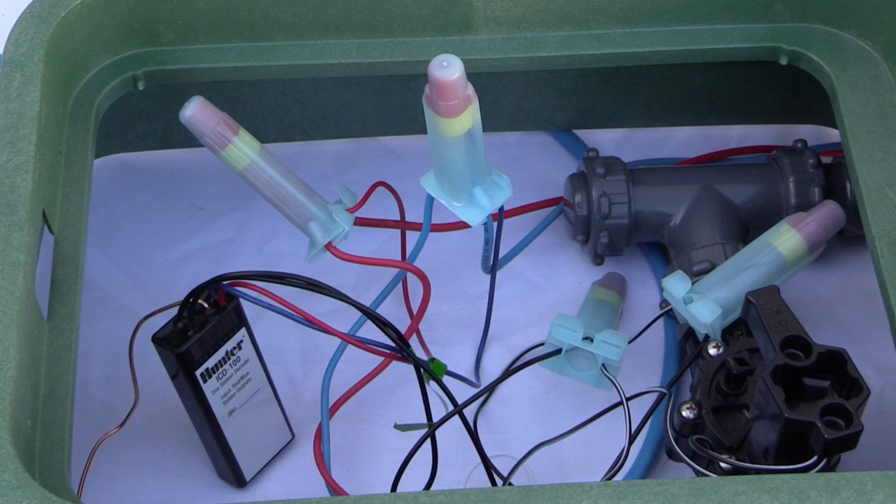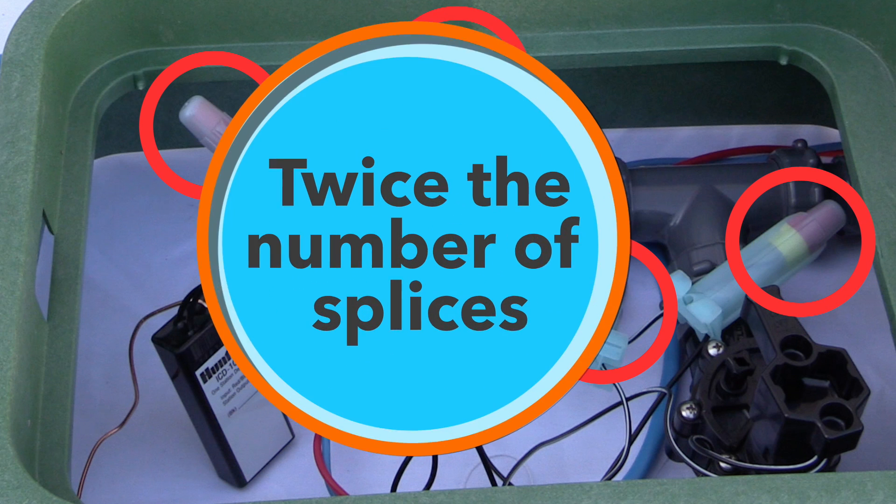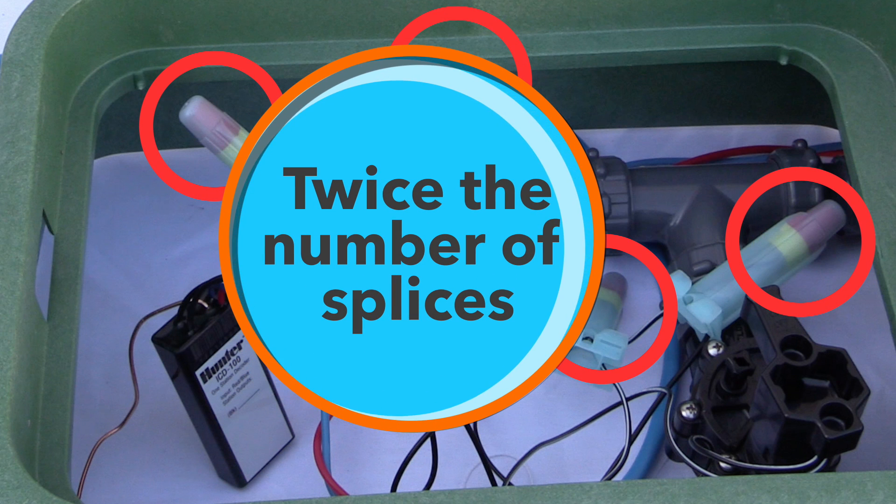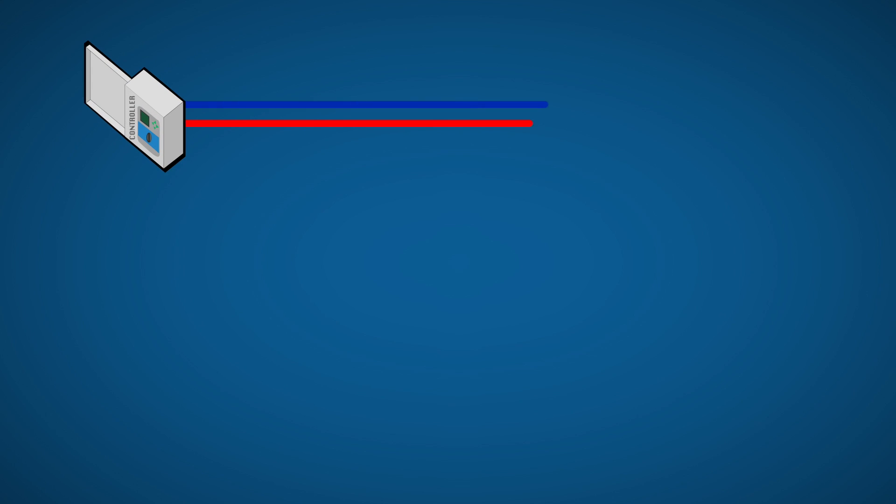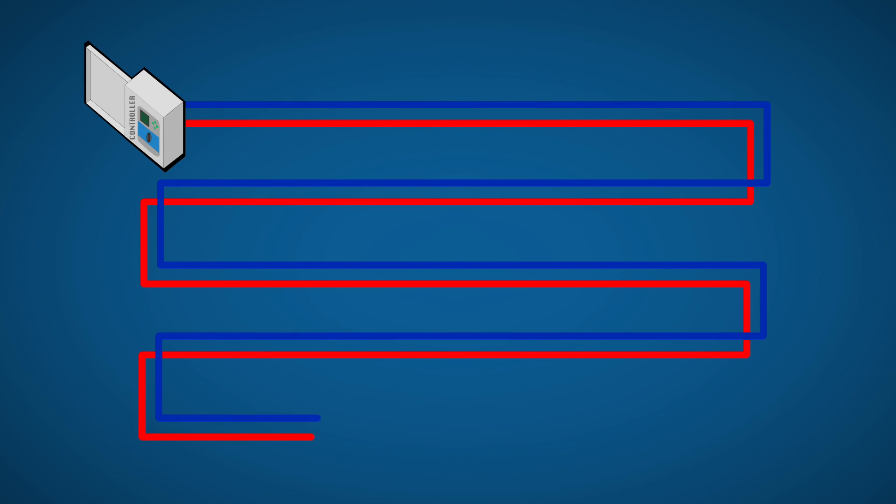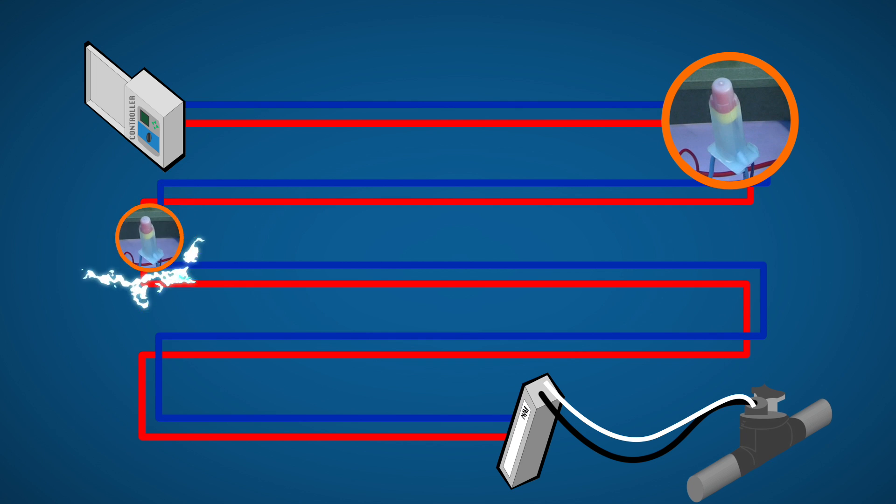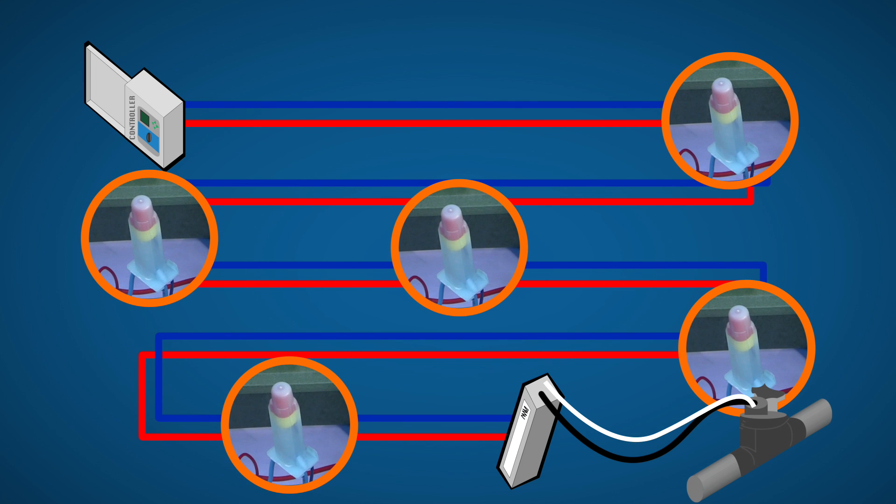The second significant difference of decoder systems versus conventional systems is the number of wire splices. Decoder-based systems have twice the number of wire splices. In the case of the valve on the far end of the two-wire path, the current often has to pass through dozens of splices before reaching the solenoid.